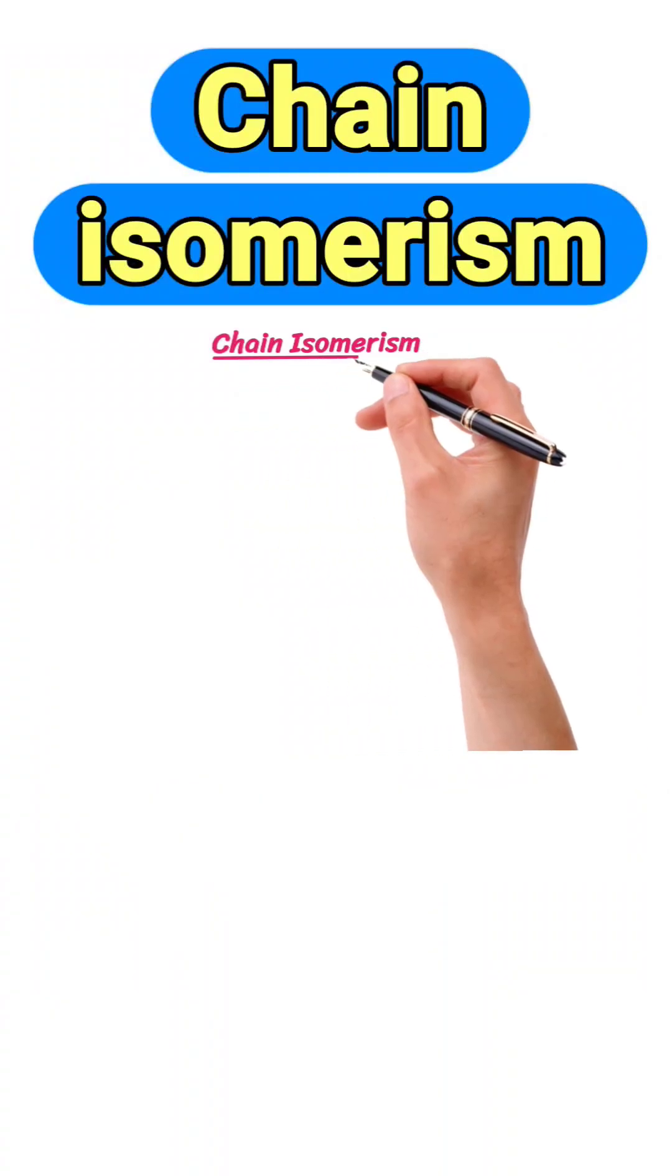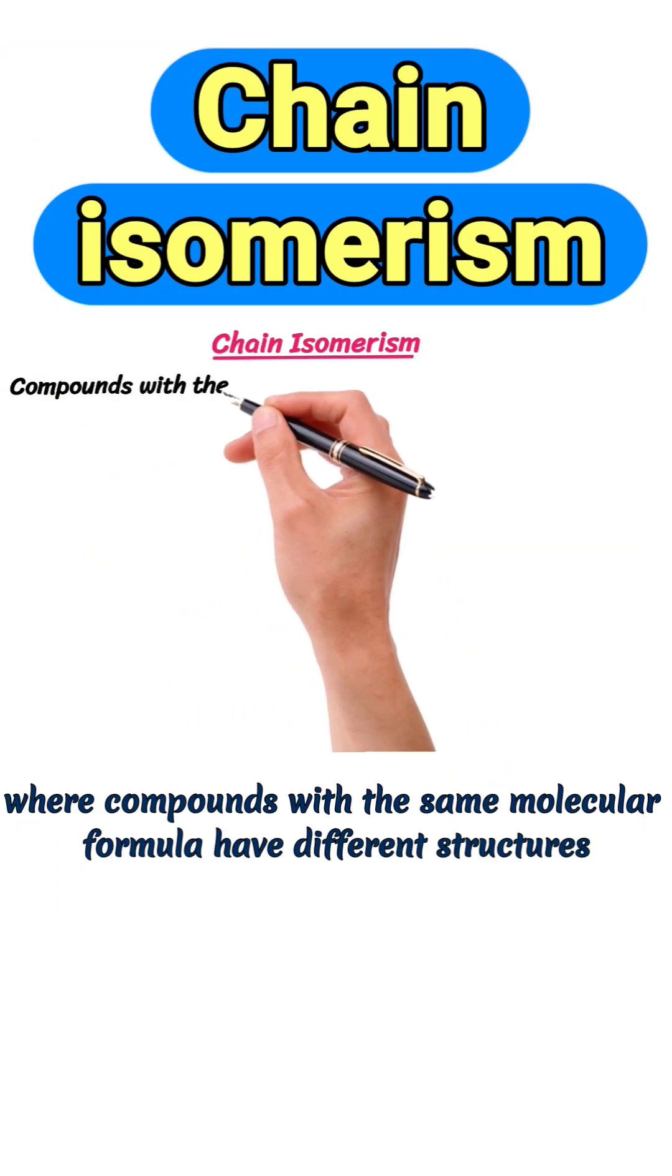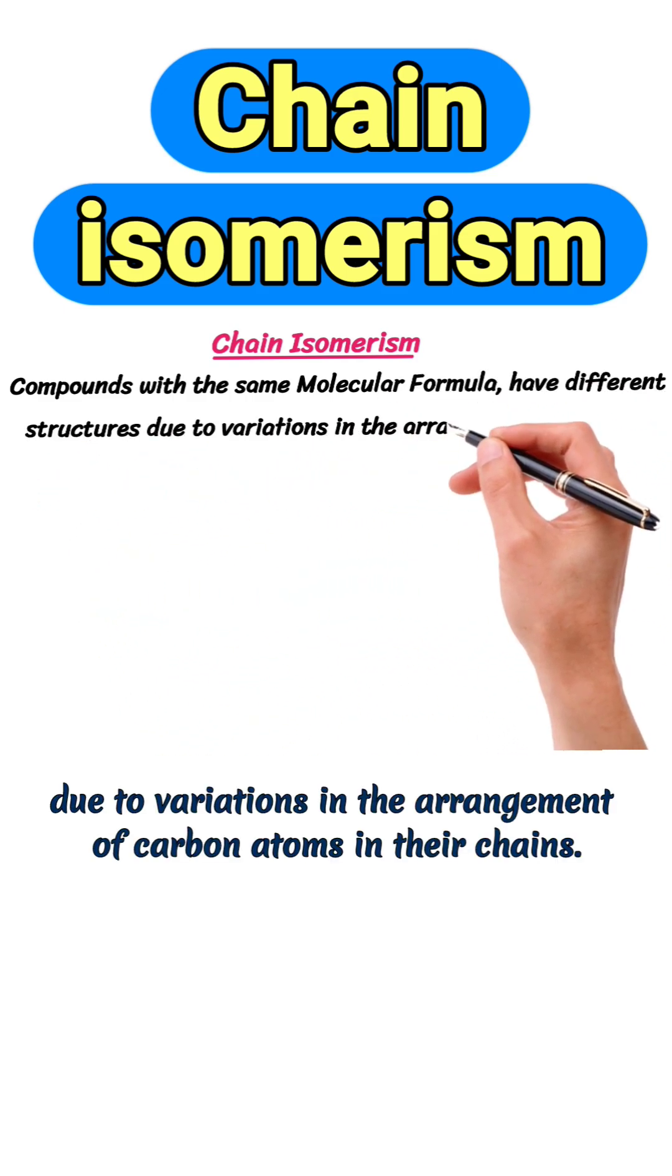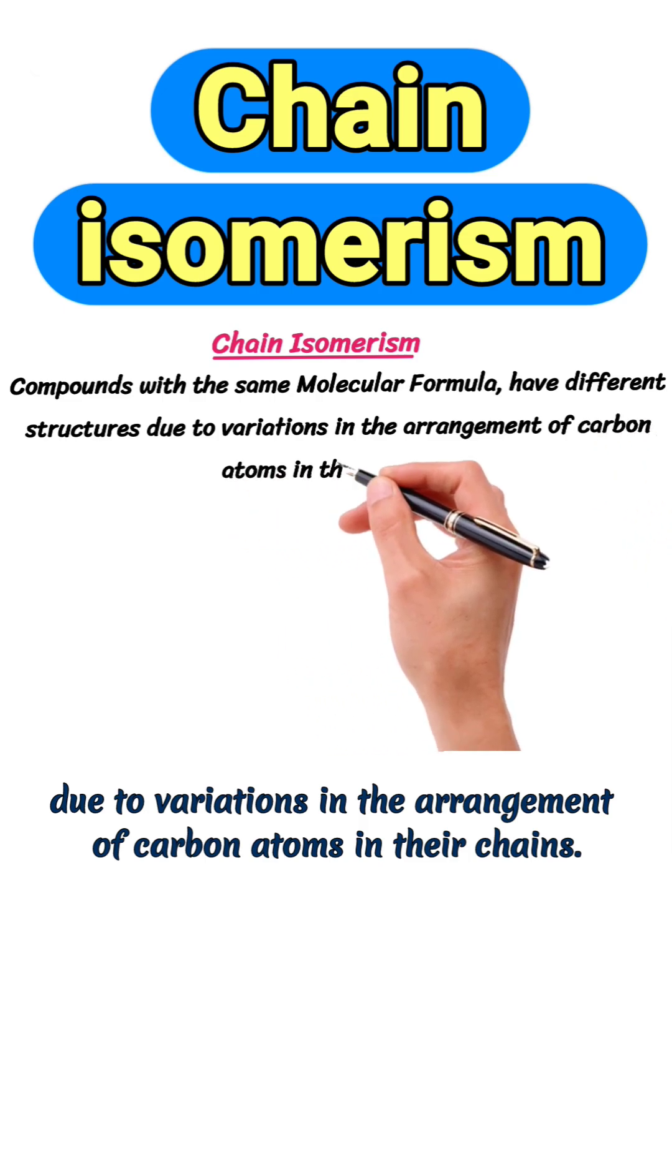Chain isomerism refers to the phenomenon where compounds with the same molecular formula have different structures due to variations in the arrangement of carbon atoms in their chains.